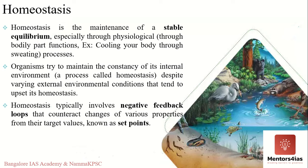Before moving ahead to explain the function of an ecosystem when it comes to homeostasis, it would be better if we understand what homeostasis is. Taking the human body as an example — homeostasis actually refers to any self-regulating process by which an organism tends to maintain stability while adjusting to conditions that are best for its survival. It is the maintenance of a stable equilibrium, especially through physiological processes.